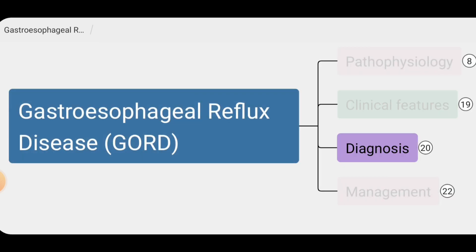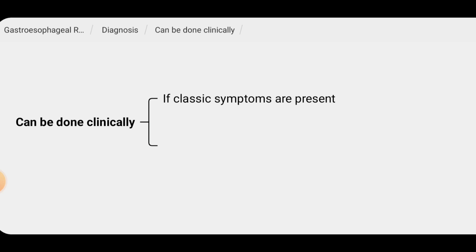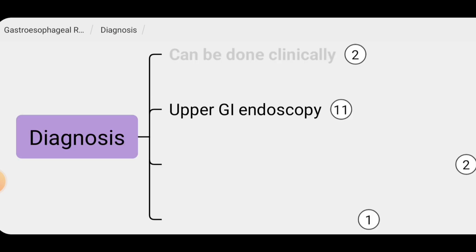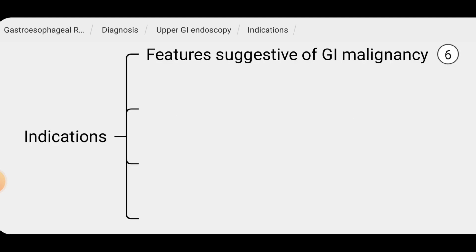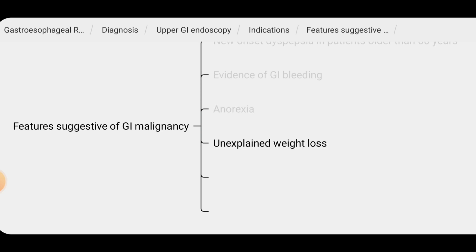How do we diagnose gastroesophageal reflux disease? The diagnosis can be made clinically if the classic symptoms of heartburn and regurgitation are present. However, if other symptoms are present, we should investigate the patient to exclude other possible diagnoses. Not in all situations do we perform upper GI endoscopy. Indications include features suggestive of malignancy, such as new onset dyspepsia in patients older than 60 years, evidence of GI bleeding, anorexia, and unexplained weight loss.